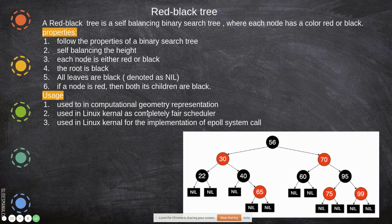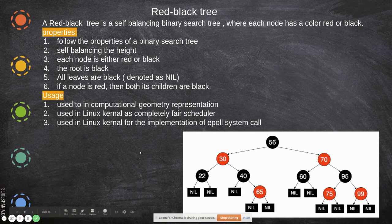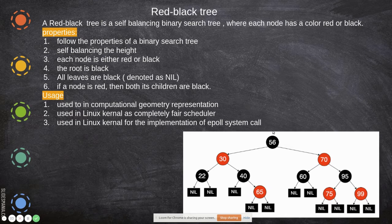These coloring rules are followed to maintain balance. The red-black tree is mainly used in computational geometry, for CPU scheduling in the Linux system, and in the ext4 filesystem system calls of the Linux kernel.